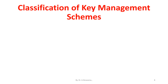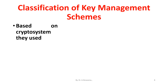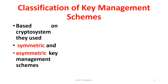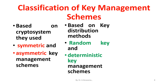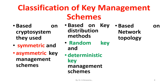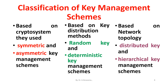Classification of key management systems: based on the crypto system they use, key management systems are classified into symmetric and asymmetric key management schemes. Based on the distribution methods, they are classified into random key and deterministic key management schemes. The third classification is based on network topology, where they are classified into distributed key and hierarchical key management schemes.